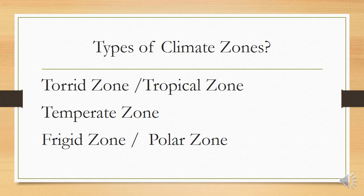Now boys and girls, let us recap our climate zones. These are the torrid zone, otherwise known as the tropical zone, the temperate zone and the frigid zone, otherwise known as the polar zones.